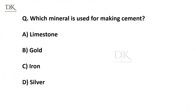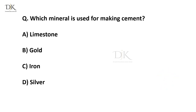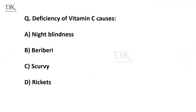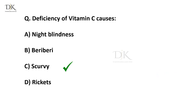Which mineral is used for making cement? Right answer is limestone. Deficiency of vitamin C causes... Right answer is scurvy.